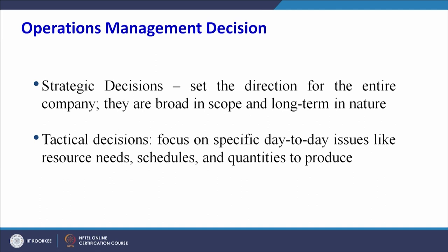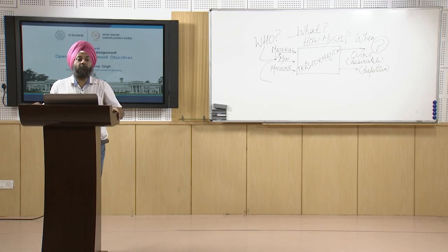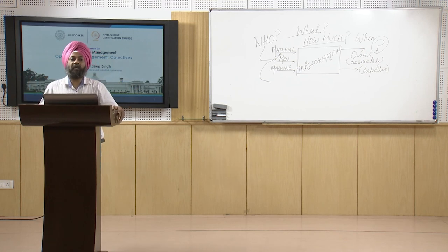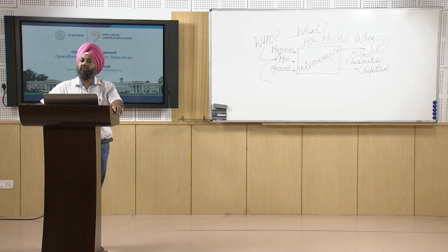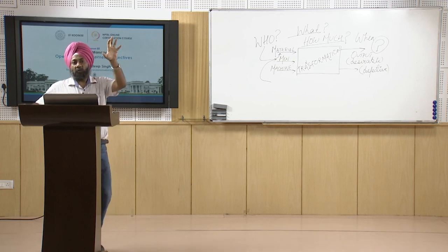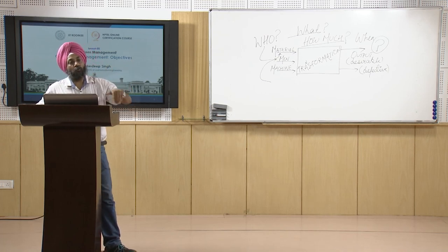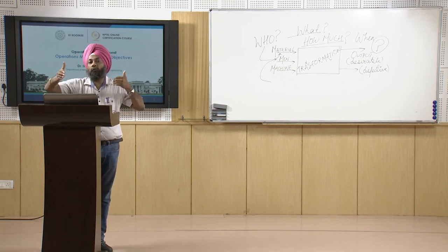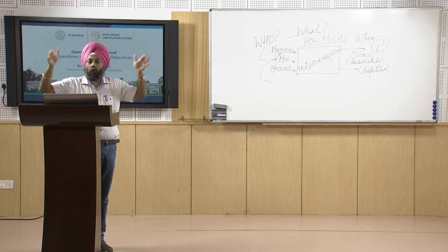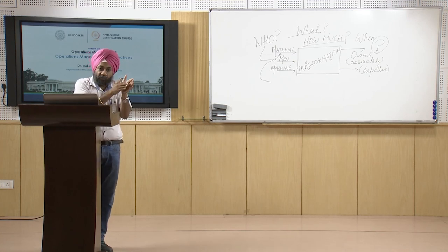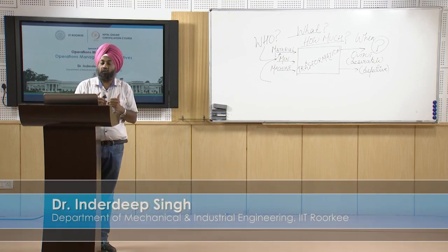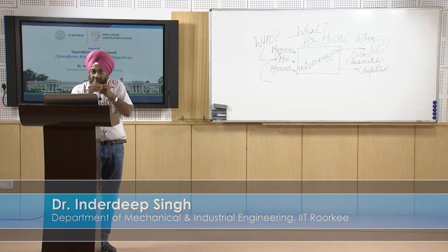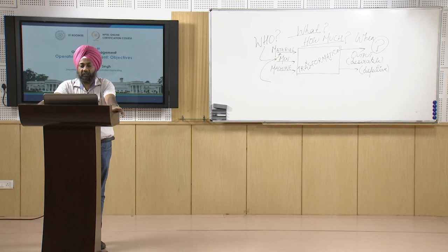Operations management decisions can be strategic — setting the direction for the entire company, broad in scope and long-term in nature — or tactical, focusing on specific day-to-day issues like resources needed, schedules, and quantities to produce. In organizations, three types of planning are done: strategic planning for the long term, corporate planning for intermediate periods, and operational planning for three to four months duration.